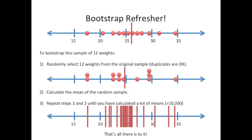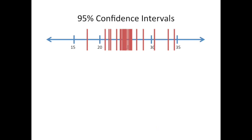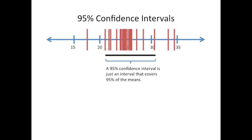Now let's talk about confidence intervals. Usually when you see a confidence interval out in the wild, it's called a 95% confidence interval. A 95% confidence interval is just an interval that covers 95% of the means. So here we have a black bar that spans 95% of the bootstrapped means that we just calculated. That's it — that's all a confidence interval is. Nothing more, nothing less.